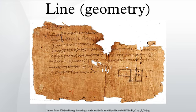A line segment is a part of a line that is bounded by two distinct endpoints and contains every point on the line between its endpoints. Depending on how the line segment is defined, either of the two endpoints may or may not be part of the line segment. Two or more line segments may have some of the same relationships as lines, such as being parallel, intersecting, or skew.